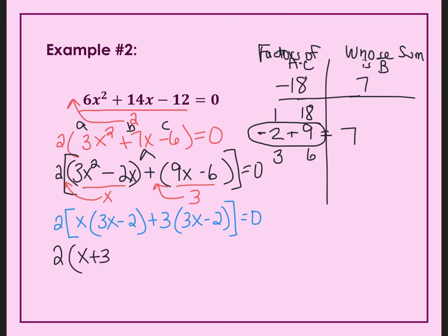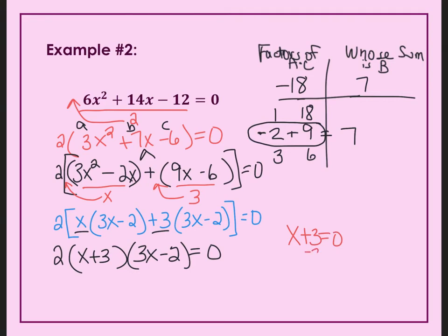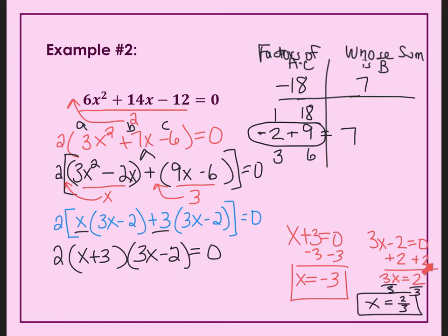I'm going to group my coefficients — x and 3 — and the common binomial goes in the other factor. Those are my factors, and now I have to find my solutions by setting each factor equal to zero. x plus 3 equals zero: subtract 3 from both sides, x equals negative 3. Then 3x minus 2 equals zero: add 2 to both sides, then divide by 3. Those are my two solutions to the quadratic.